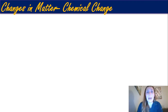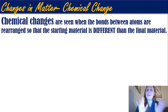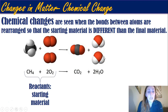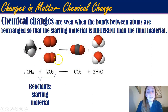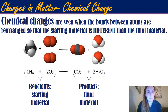Now that we're done talking about physical changes, it's time to talk about chemical changes — which are much more fun. Chemical changes are seen when bonds between atoms are rearranged so that the starting material is totally different from the final material. For example, methane and oxygen react to form carbon dioxide and water. What you start with in a chemical reaction is called the reactants, always on the left-hand side of the equation, separated by a plus sign. The arrow means 'yields' or 'produces.' Everything on the right-hand side is the products, your final material.